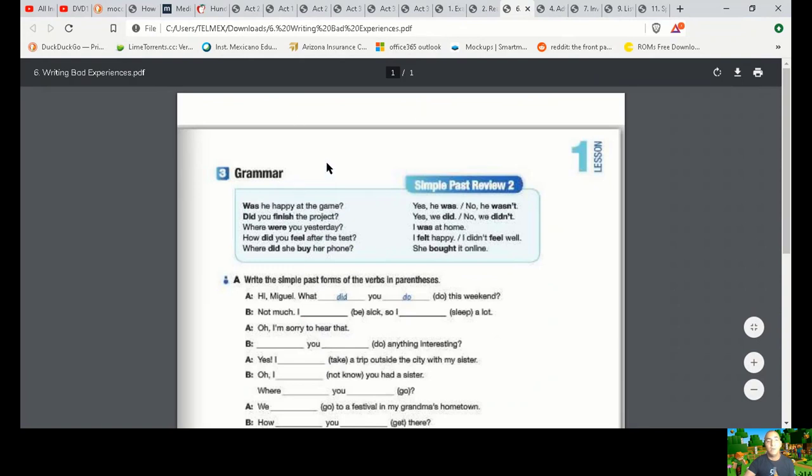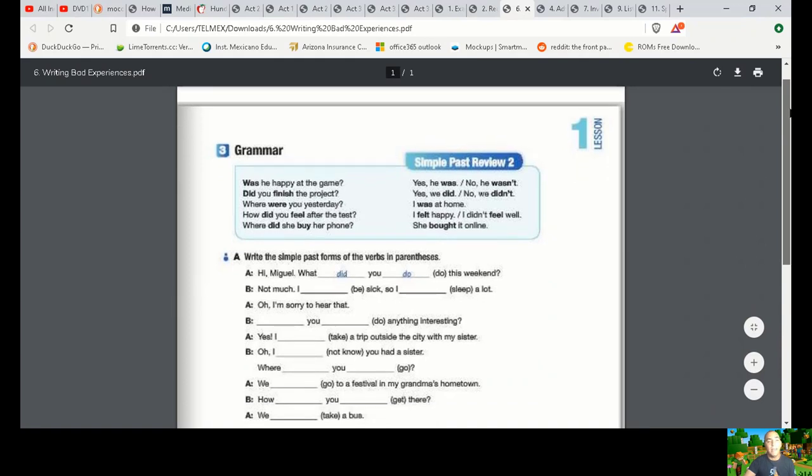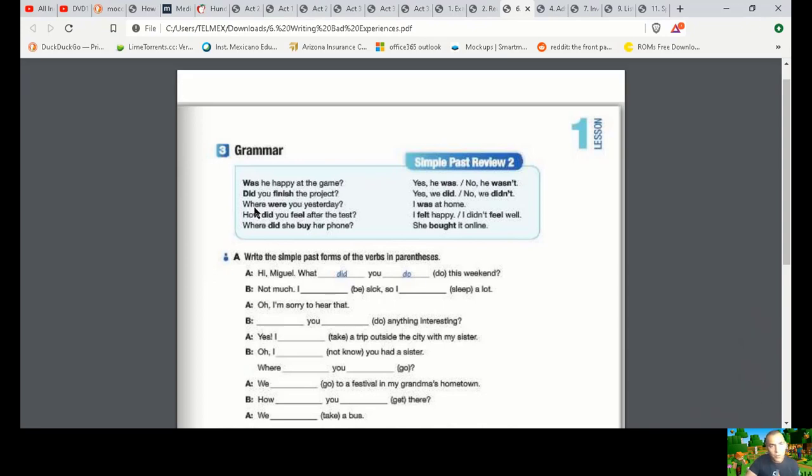Lesson number one. Grammar, simple past review. Was he happy at the game? Yes, he was or no, he wasn't. Did you finish the project? Yes, he did or no, we didn't. Where were you yesterday? I was at home. How did you feel after the test? I felt happy. I didn't feel well. Where did she buy her phone? She bought it online.